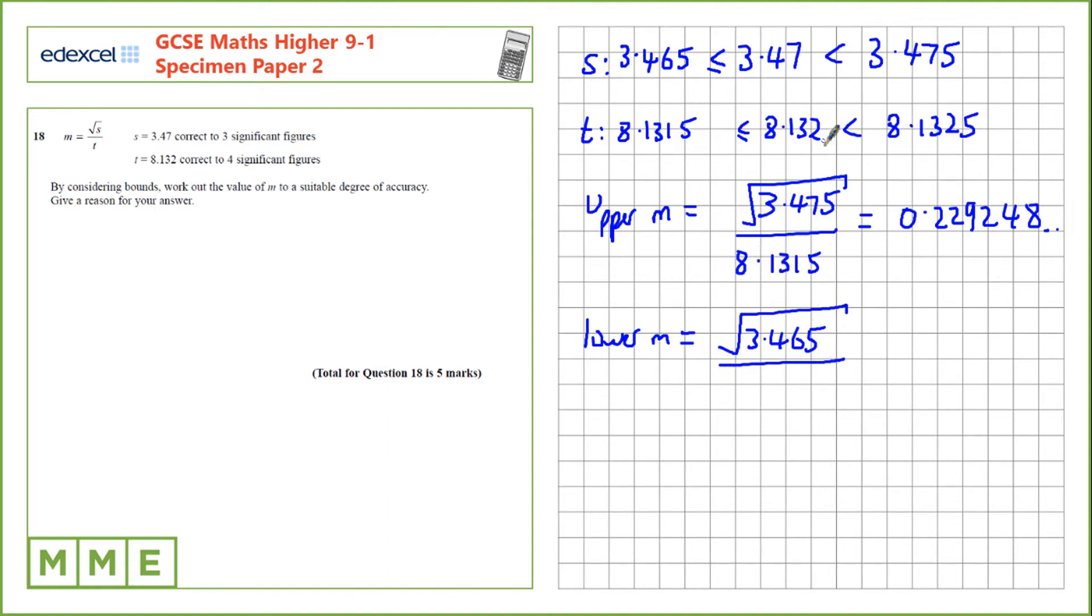And the largest value of t is this bound here, 8.1325. Again, if we put that in the calculator, we get 0.22889.